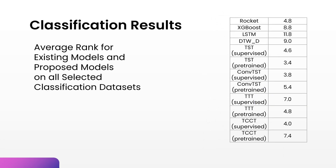As for classification, the pre-trained base model performed the best with an average rank of 3.4. Coming in second is supervised Convo transformer with an average rank of 3.8, followed closely by supervised tightly coupled Convo transformer with an average rank of 4. It can also be observed that all proposed models outperform all state-of-the-art approaches except for Rocket.